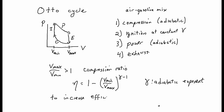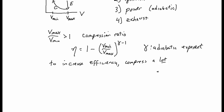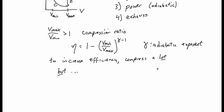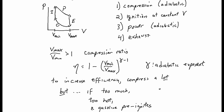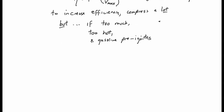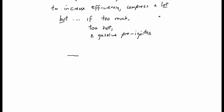To increase efficiency, we want to make the compression ratio as large as possible — we want to compress it a lot. There's a problem with that: if we compress it too much, the gas gets too hot and the gasoline pre-ignites. We need it to ignite during the ignition step. If it pre-ignites, that means it ignites during the compression step, giving us a different cycle that doesn't work very well.